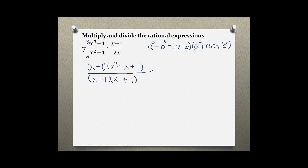The top part of the second fraction is already in factored form, and the bottom as well — you cannot factor any further. So now we are ready to cross out what they have in common, top and bottom. I see x minus 1 on top and x minus 1 on the bottom, and also x plus 1 on top and x plus 1 on the bottom.